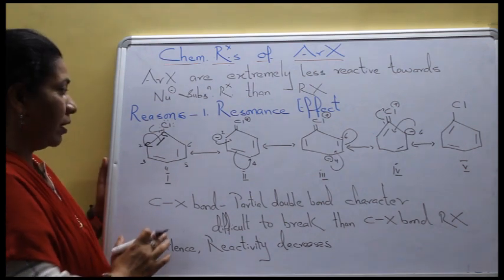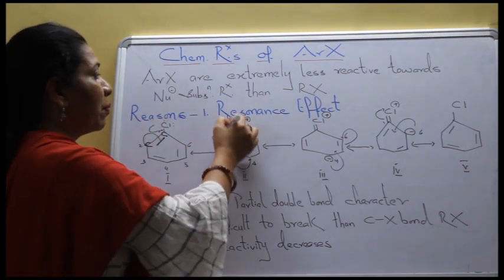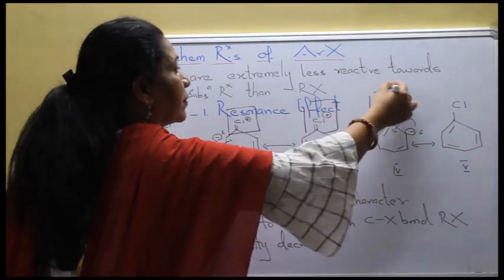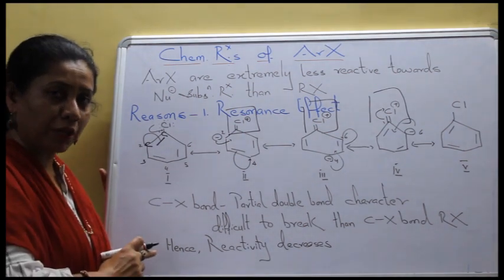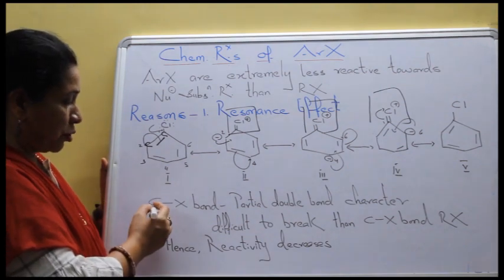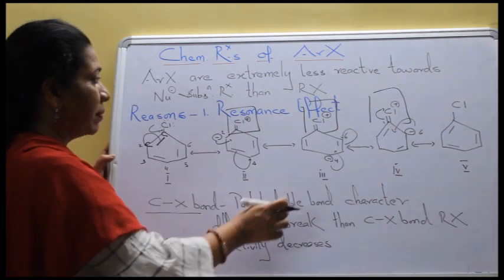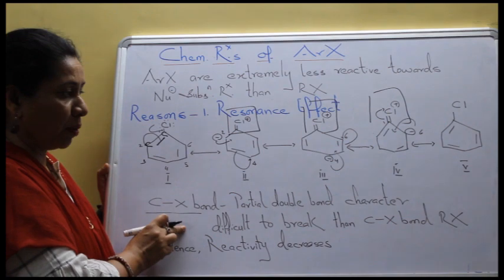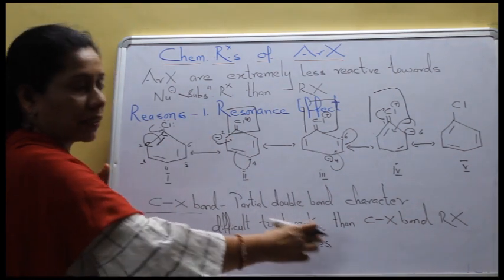Checking these five resonating structures, we find that our C-Cl bond has developed partial double bond character. A double bond is always more difficult to break than a single bond. That's why the reactivity of haloarines is reduced. The C-X bond gets partial double bond character because of resonance, making it difficult to break compared to the single bond in R-X. Hence, reactivity decreases.